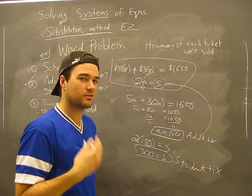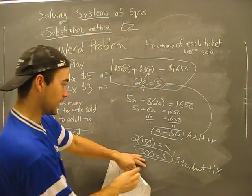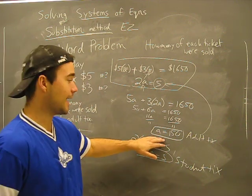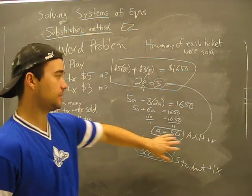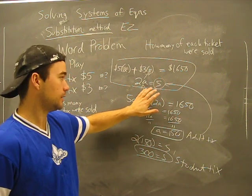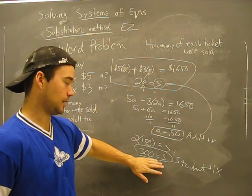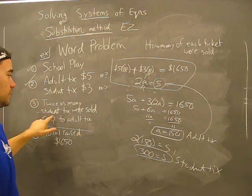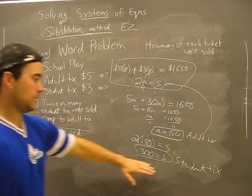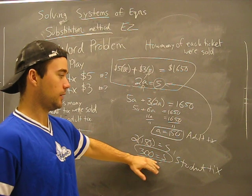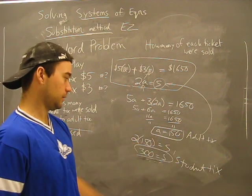We got our A, our adult ticket number, and then we substitute that back into our equation to get our S, which is our student ticket number. Now, does this make sense? Twice as many student tickets were sold compared to adult tickets. 300 is twice as many as 150. So we're good to go.